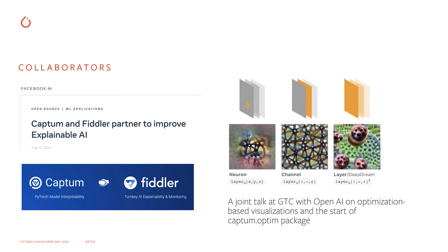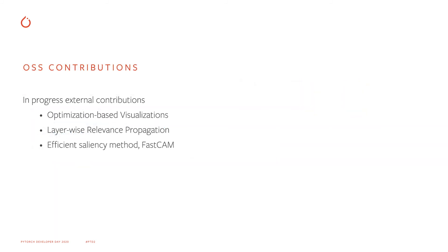We had a number of collaborators I'd like to mention. One is Fiddler, an explainable AI company that incorporated Captum into its platform, allowing Fiddler users to explain their PyTorch models. Another collaboration was with OpenAI, which resulted in a captum.optim package offering optimization-based visualizations — an ongoing effort with new external contributors. We also have layer-wise relevance propagation and efficient saliency methods such as FastCAM as ongoing contributions.